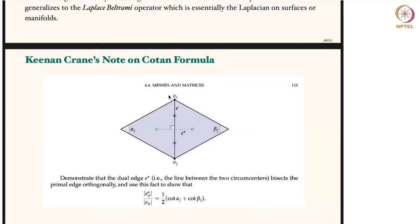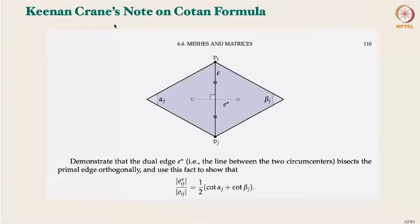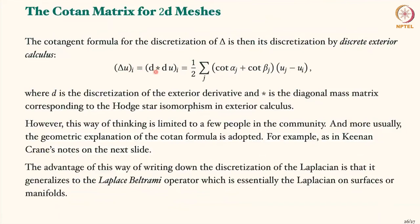Question: In the finite element method for discretizing the Laplace-Beltrami, there's a mass matrix that comes up — why doesn't it appear in discrete exterior calculus? Answer: It does show up in discrete exterior calculus as well. The difference is that in discrete exterior calculus the mass matrix is a diagonal matrix, whereas in finite elements it's a sparse banded system.